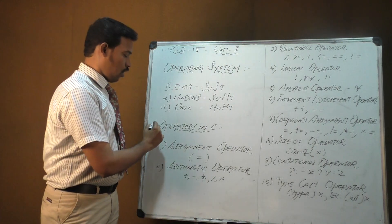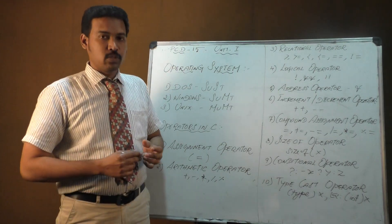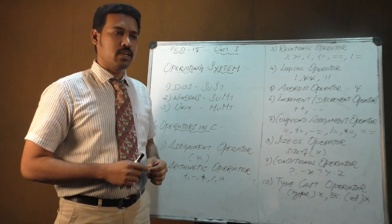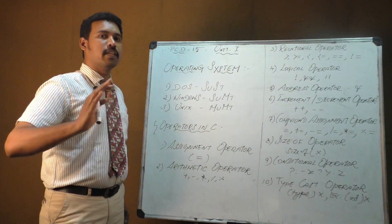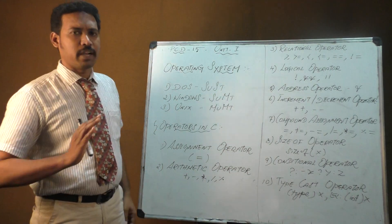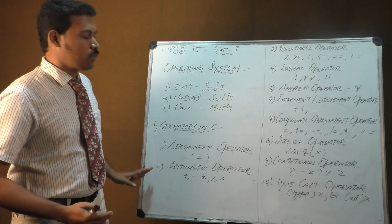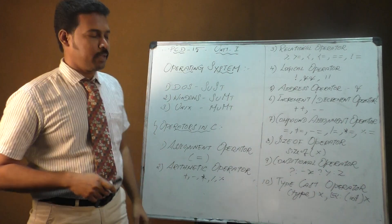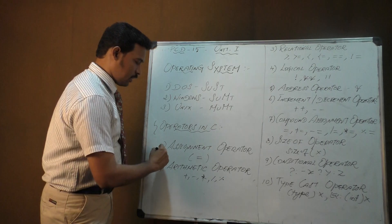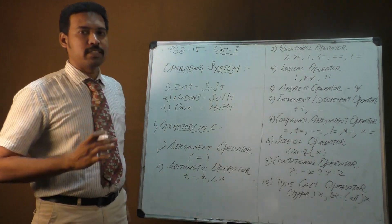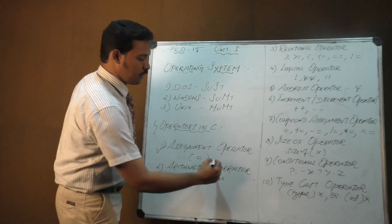The next concept is operators in C. Operators play a major role in C programming, handling addition, subtraction, multiplication, and other operations. There are around 10 operators available in C. The first is the assignment operator, used to assign a value to a variable.